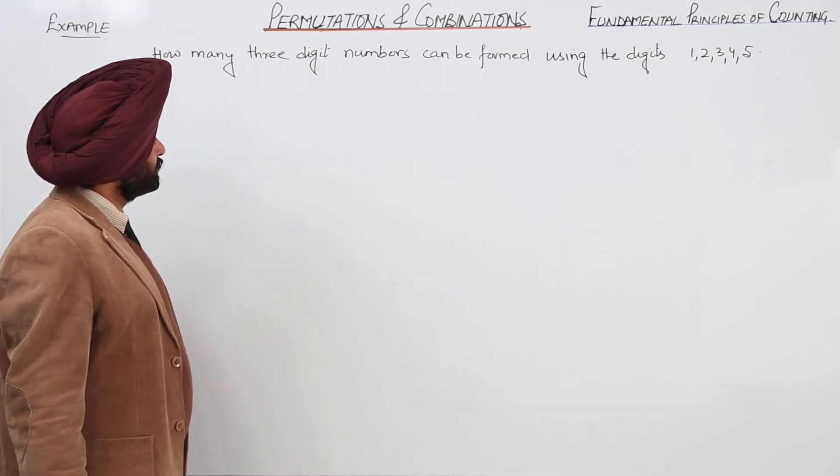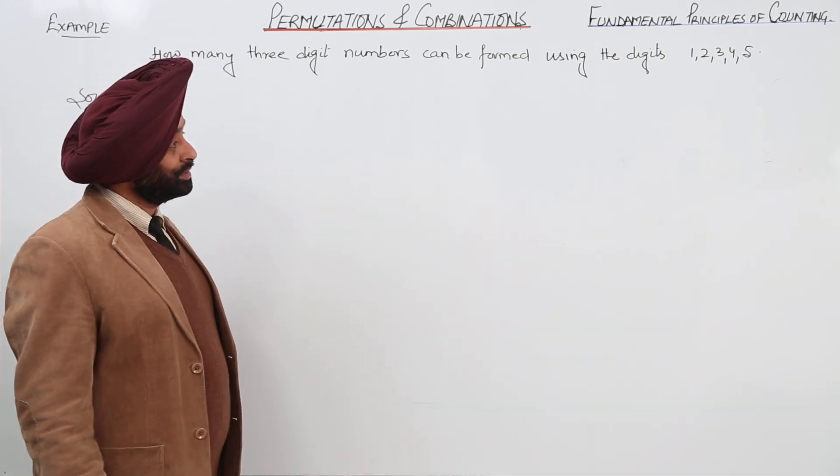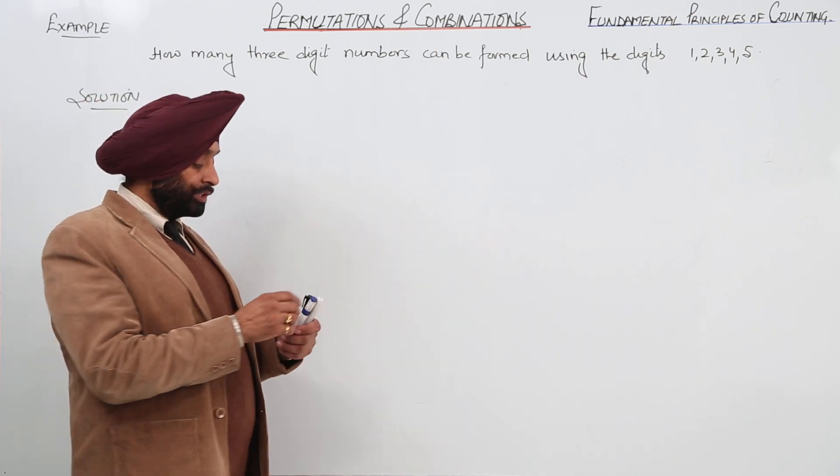Now example, how many 3-digit numbers can be formed using the digits 1, 2, 3, 4 and 5? We have given 5 digits.